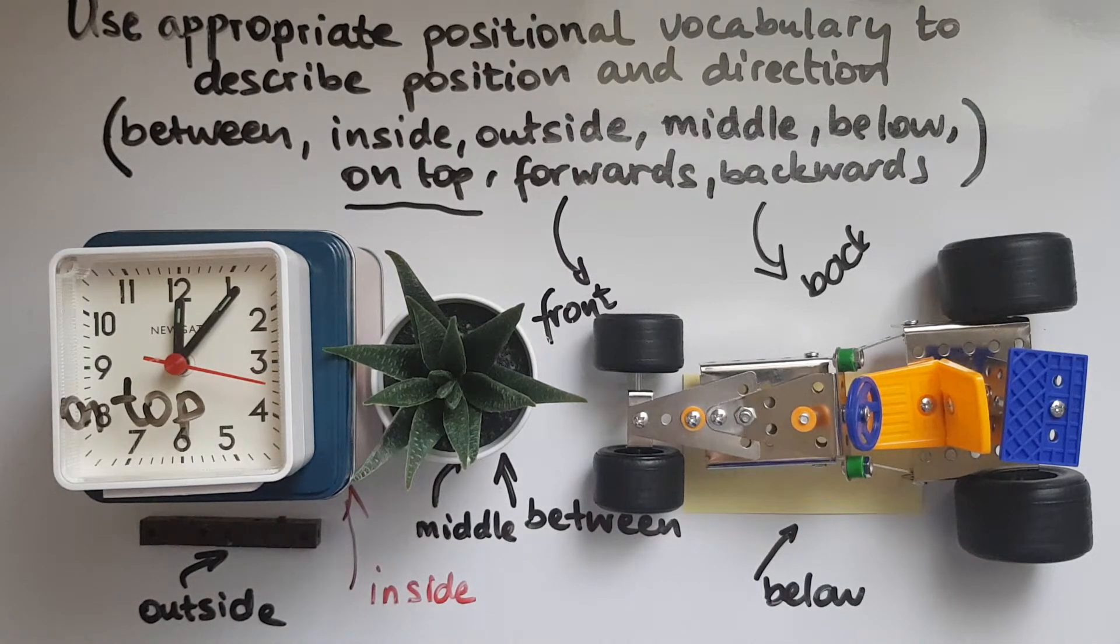So this should help you now with everyday life position and direction. So you could say to somebody, you can move forwards, and you can move backwards. You can identify where an item is sitting. Is it in between the other items? Is it in the middle? Is it inside? Is it outside? And so on.